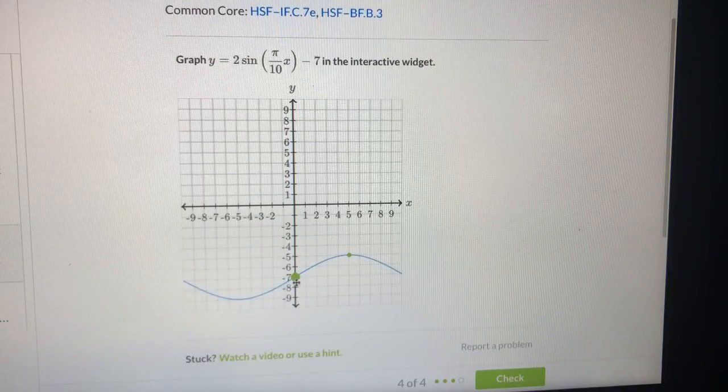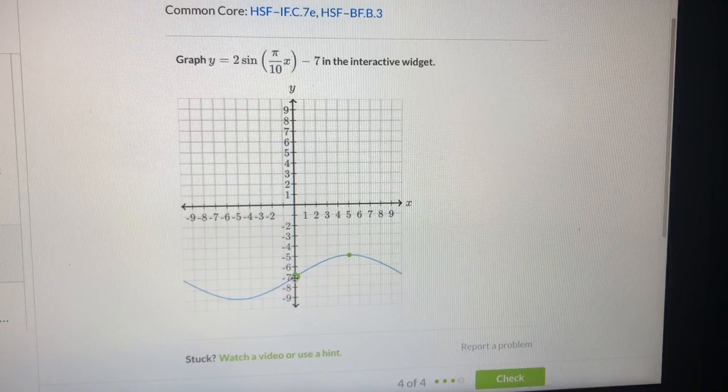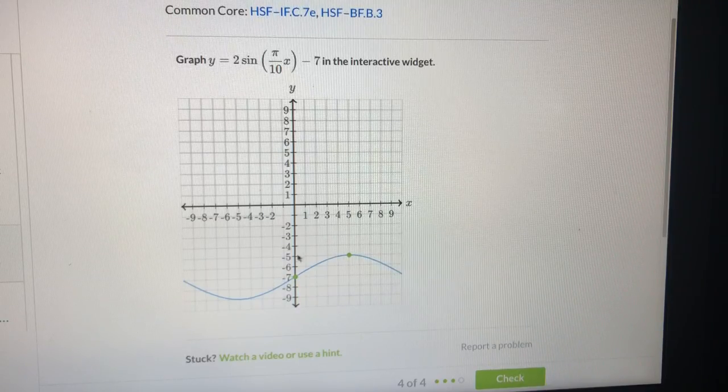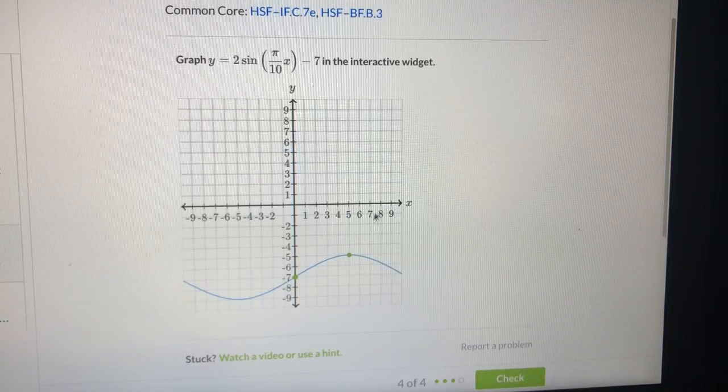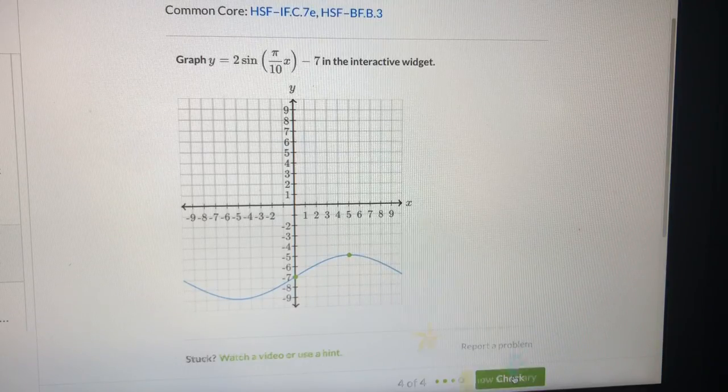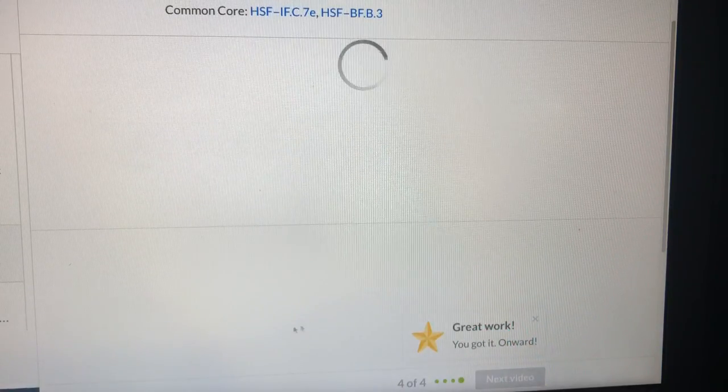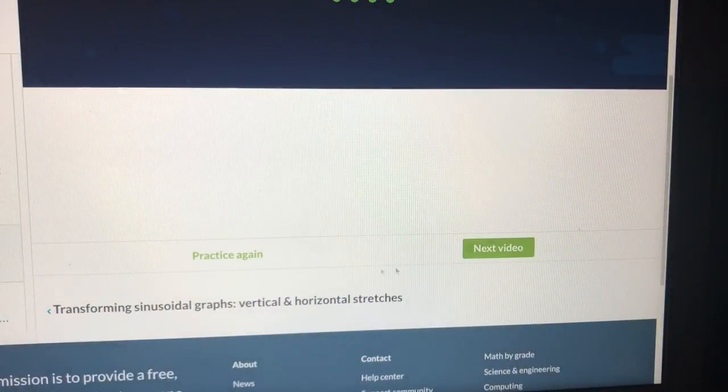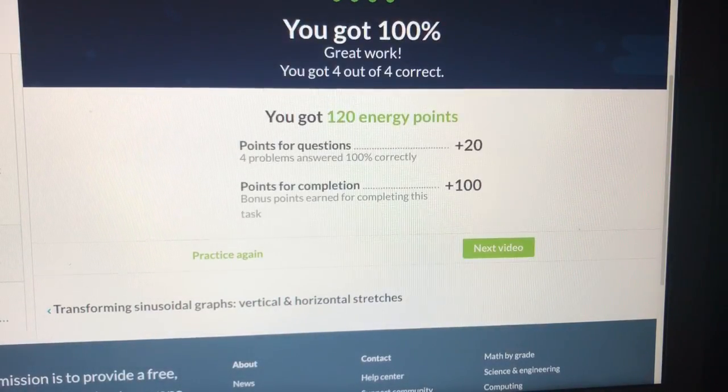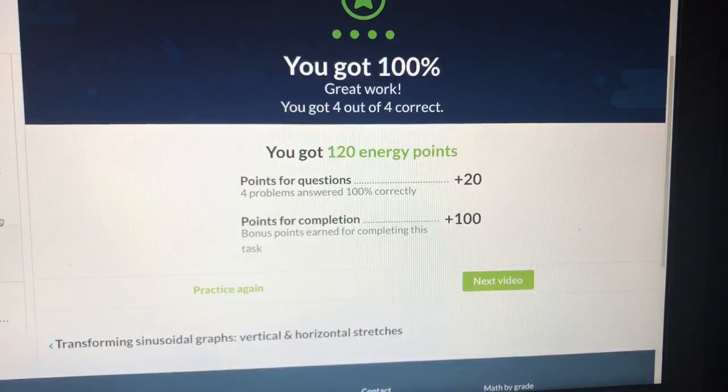Let me check it again. Negative 7. Amplitude 2. Period 20. Check. Yes, we are right. Next we do practice again. We are done with this.